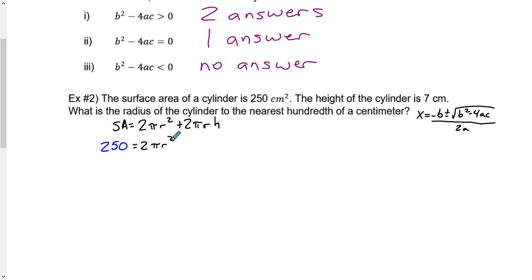We don't know what the radius is because that's what the question is asking. 2πr, and it says that our height is 7. In order for us to use the quadratic formula, we need to have one side equal to 0. So I'm going to subtract 250 over.